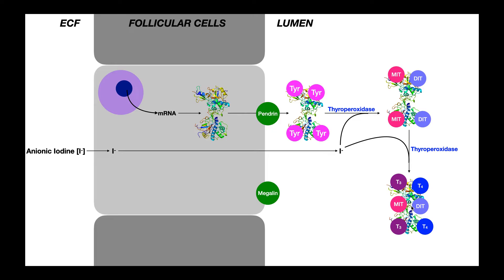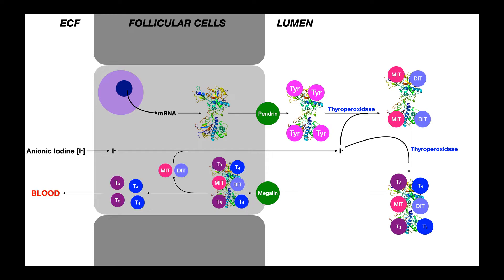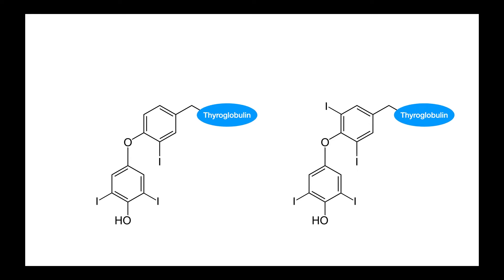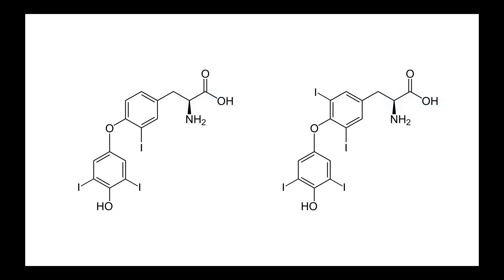This chemically modified thyroglobulin is then endocytosed back into the follicular cell — aided by a protein complex called megalin. The thyroglobulin is contained within an endosome, which combines with a lysosome to form a lysoendosome. Lysosomal enzymes break down the protein, releasing all the pieces. The iodine from any remaining MITs and DITs is recycled back into the process. Most importantly, we've now generated mature T3 and mature T4, which can be moved into the blood and travel to peripheral tissues to exert their functions.